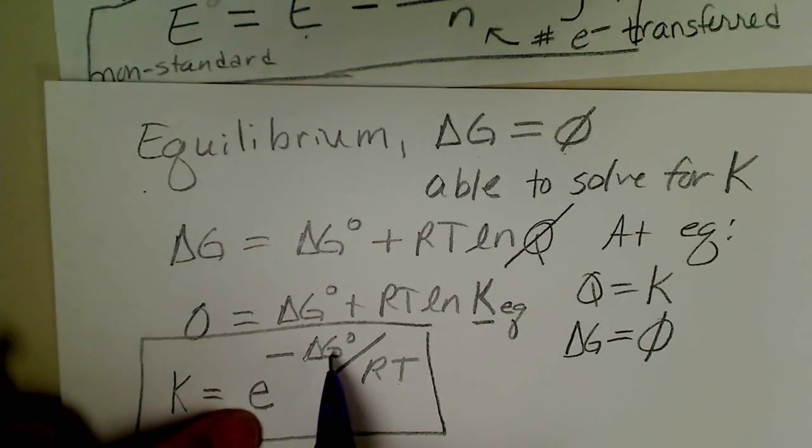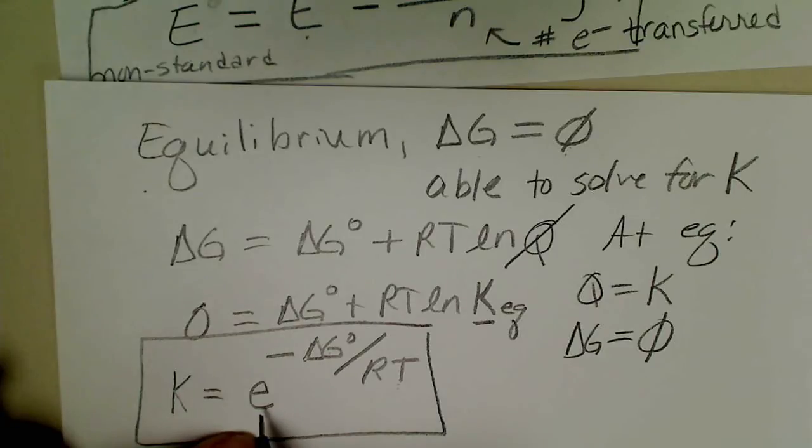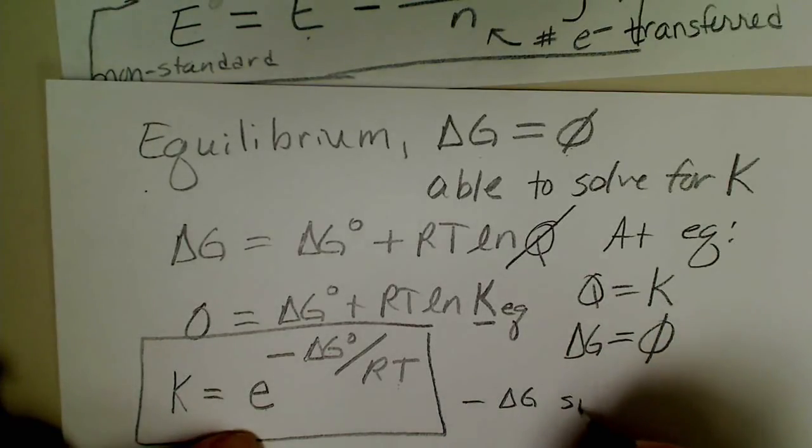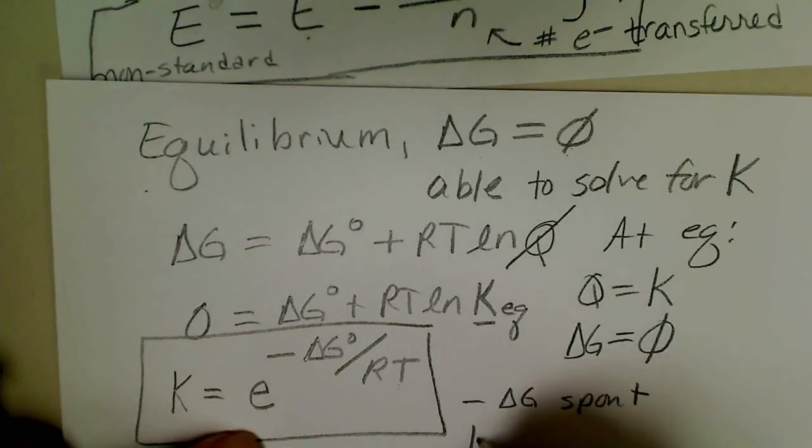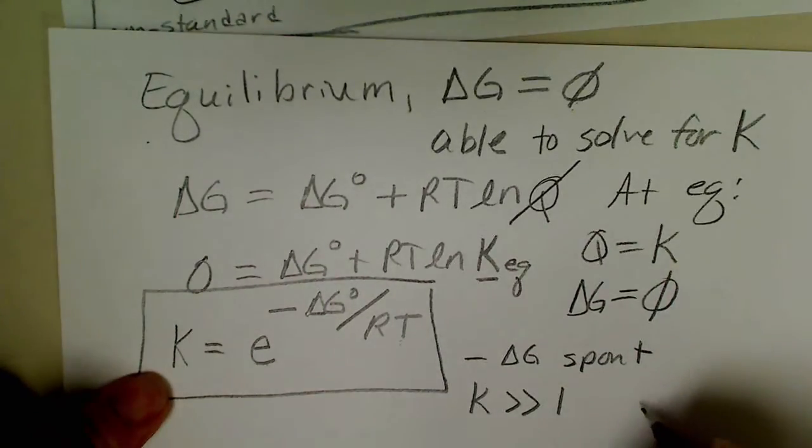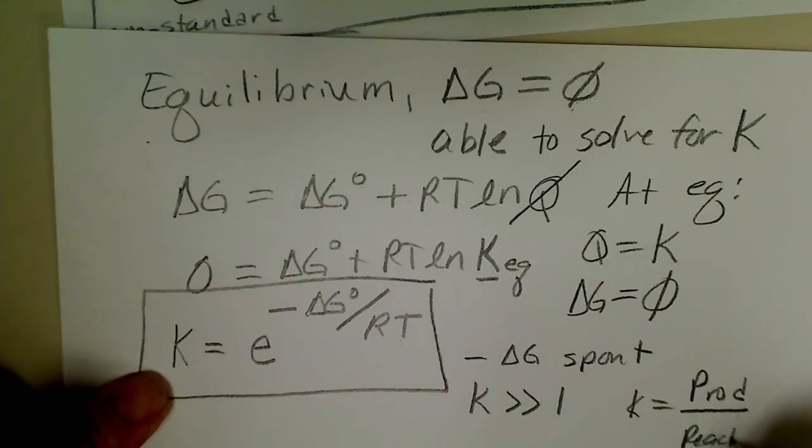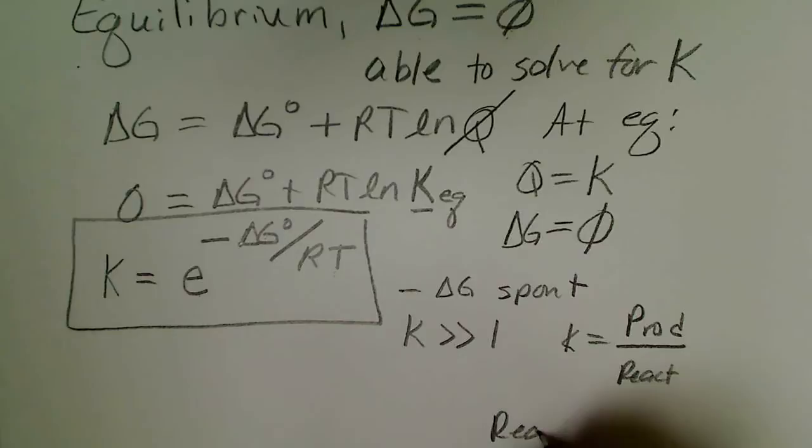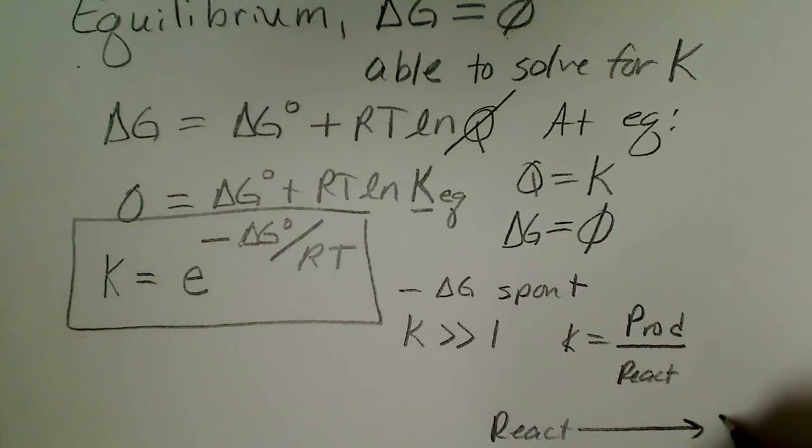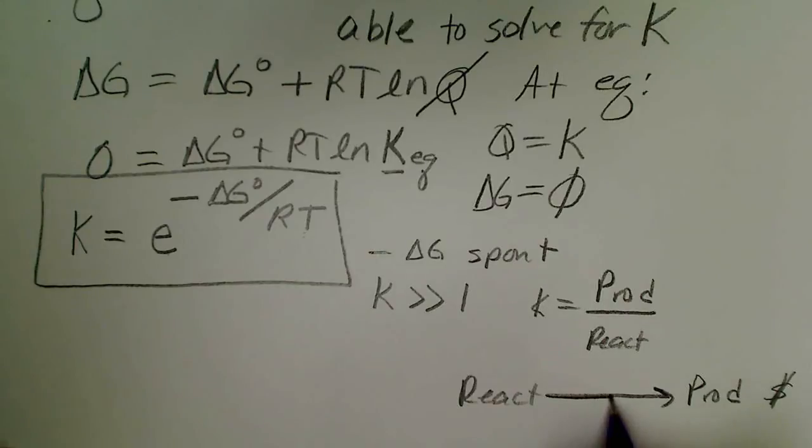In fact e raised to the negative delta G over RT, if you go on in chemistry you will see that term quite often. And recall a negative delta G is spontaneous, that also means that the value for K is going to be considerably larger than one because a large value for the equilibrium constant means that there are more products in that ratio than there are reactants. So that means the equilibrium favors products, which is what we like because then we make a profit. So a large value for K means the reaction proceeds to the right more than it proceeds in the reverse direction.